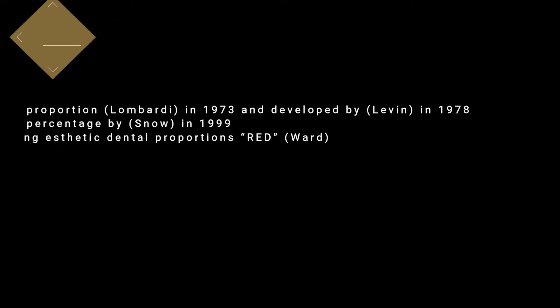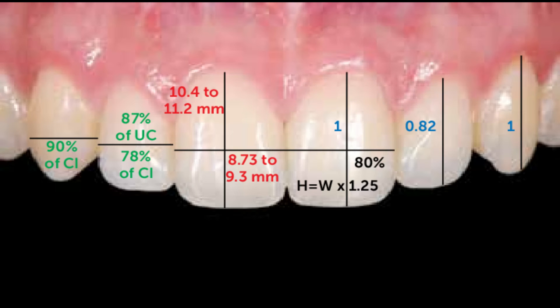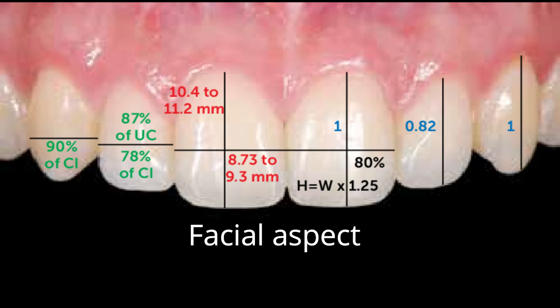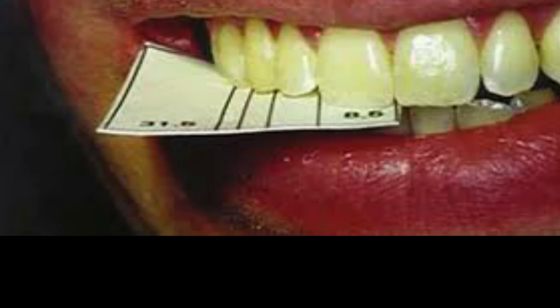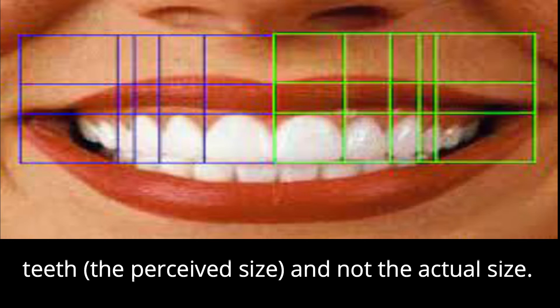The golden ratio is believed to have a more static and satisfying appearance to humans. The three dental proportion guidelines are: the golden proportion by Lombardi, the golden percentage by Snow, and the recurring aesthetic dental proportion. These proportions are based on the teeth viewed from the facial aspect — meaning the distance between proximal line angles of the teeth, the perceived size, not the actual size.